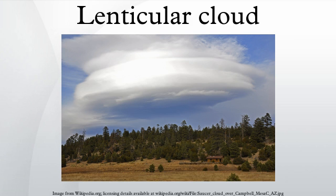Under certain conditions, long strings of lenticular clouds can form near the crest of each successive wave, creating a formation known as a wave cloud. The wave systems cause large vertical air movement, enough that water vapor may condense to produce precipitation.